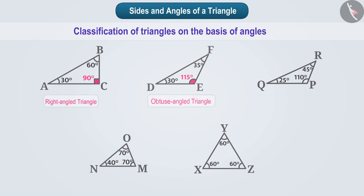Triangle DEF has an obtuse angle, so it is an obtuse angled triangle. Triangle PQR has an obtuse angle, so it is also an obtuse angled triangle. Triangle MNO has all three angles acute, so it is an acute angled triangle.